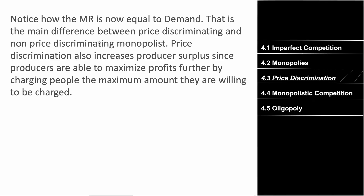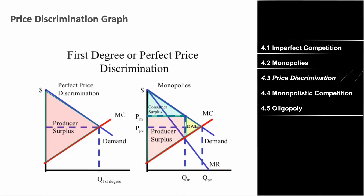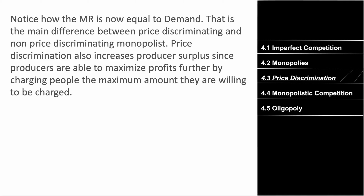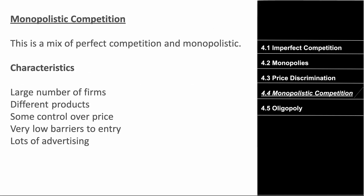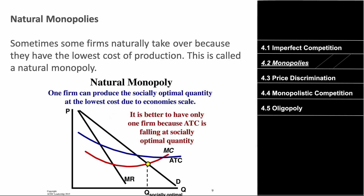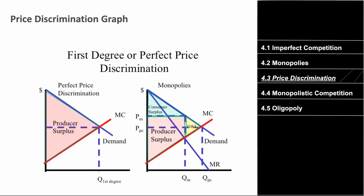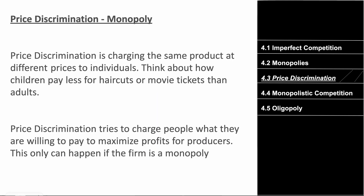That is the main difference between a price-discriminating and non-price-discriminating monopolist. Price discrimination increases and maximizes producer surplus. Also remember: price discrimination only occurs in monopolies — you can only price discriminate when you have a monopoly in a market.